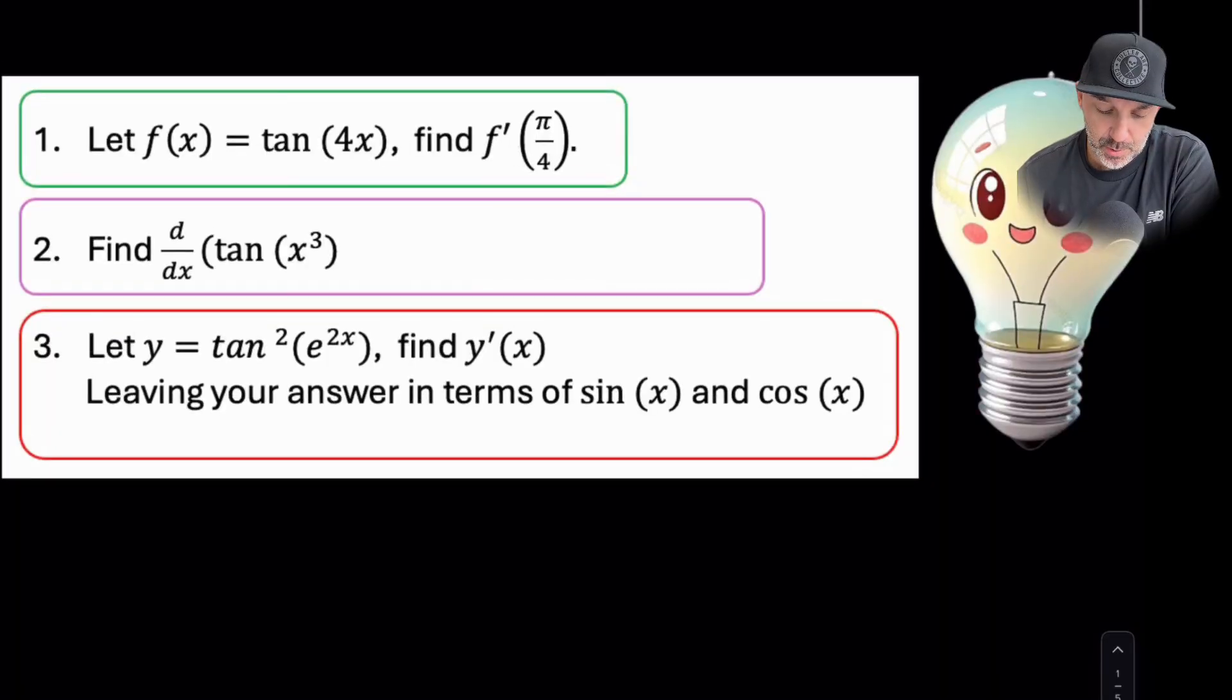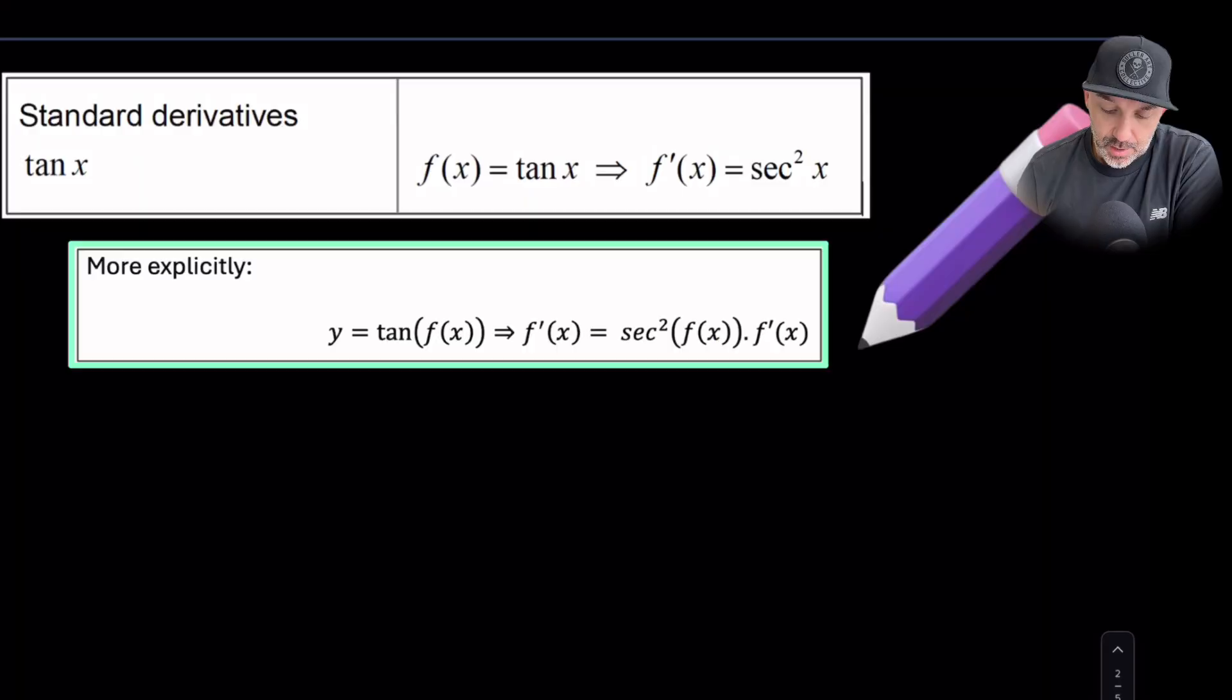I have three questions here, they get progressively more difficult. I have to substitute radians in on the first one and also on the third one I have to differentiate tan squared but also then leave it in terms of sine and cos.